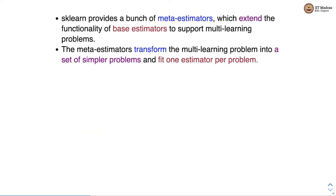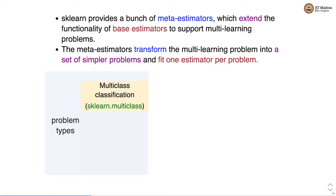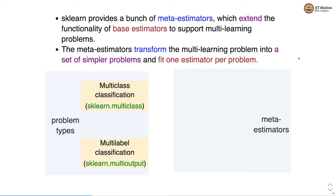sklearn provides a bunch of meta estimators which extend the functionalities of base estimators to support multi-learning problems. The meta estimators transform the multi-learning problem into a set of simple problems and fit one estimator per problem. There are meta estimators for each of these problem types.